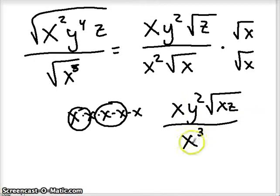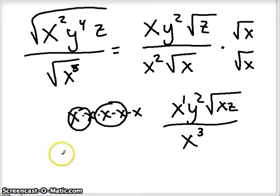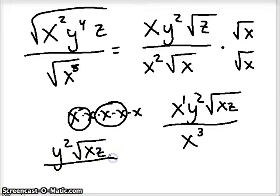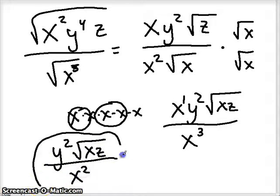Last step is to simplify our x's. We have x to the 1 over x to the 3rd, so one x cancels. We're left with y squared, and x and z under the radical on top, and only x squared on the bottom. So there's our final answer.